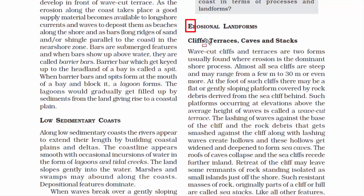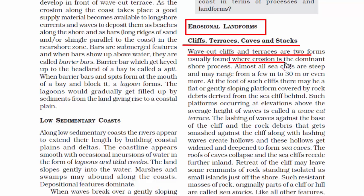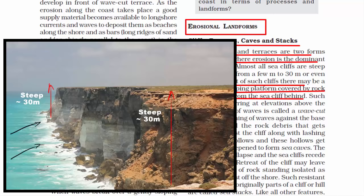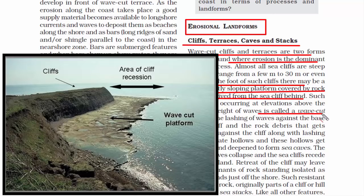Now we will read about some erosional landforms that exist due to waves and currents. The first one is cliffs, terraces, caves and stacks. Sea cliffs are steep coastal slopes created by the massive power of waves, which constantly hit the cliffs and make them steeper. At the foot of such cliffs there may be a flat or gently sloping platform covered by rock debris — these are parts of the cliff. When waves hit the cliff, smaller chunks of rock break off and form a terrace-like landform called a wave-cut terrace.